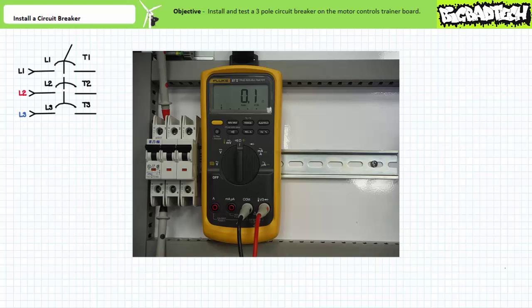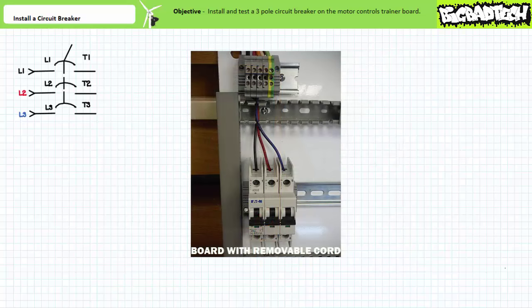Now we'll wire up the circuit breaker. Note the plug is currently locked in the lockout tagout enclosure. We can now wire phase L1, L2, and L3 from the terminal blocks to the circuit breaker. The black, red, and blue wires serve this purpose.